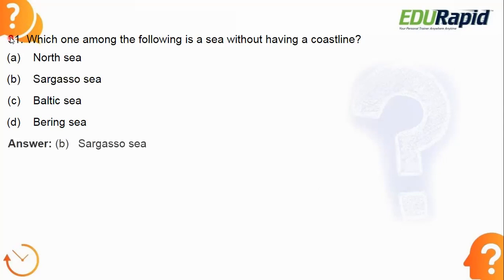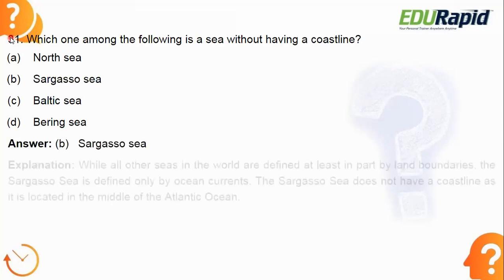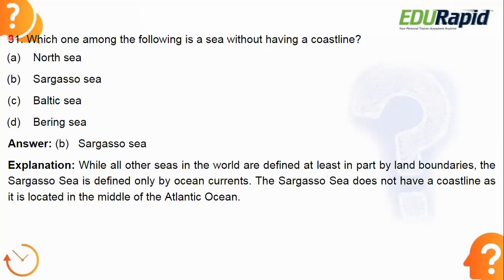The answer is option B — the Sargasso Sea. Please remember, the Sargasso Sea is an ocean gyre. A gyre, or ocean gyre, is a region bounded by different ocean currents. The Sargasso Sea has no coastline; it is located in the Atlantic Ocean and is bounded by four ocean currents, forming an ocean gyre.